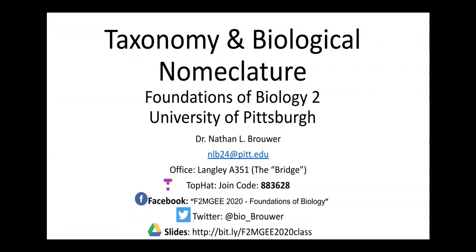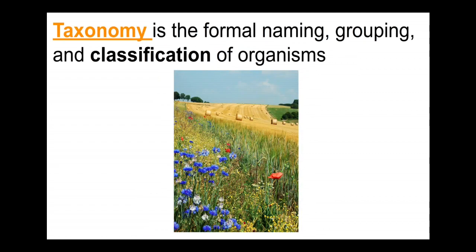In this video, we're talking about taxonomy and biological nomenclature, particularly talking about species and subspecies in general and how they fit into the larger picture. What we mean when we talk about taxonomy, what we mean by biological nomenclature and binomial nomenclature. Taxonomy is the part of biology that focuses on formally naming, grouping, and classifying organisms — coming up with a way of structuring our knowledge.